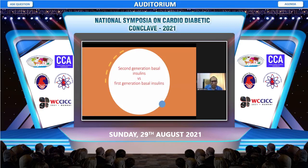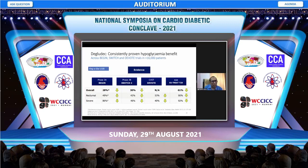Looking at how these second generation analogs have made a difference in clinical practice: there is a reduction in both nocturnal and severe hypoglycemia of almost 40 to 50% in different studies. In real-world studies like the EU Treat-to-Target type 2 diabetes study, there was a 61% overall reduction in hypoglycemia, 90% reduction in nocturnal hypoglycemia, and 92% reduction in severe hypoglycemia — a significant difference between second and first generation basal insulins.